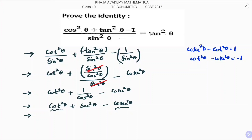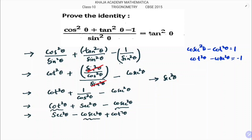Write it as sec²θ minus cosec²θ + cot²θ. Take minus common from the last two terms: sec²θ minus (cosec²θ - cot²θ). By the standard identity, cosec²θ - cot²θ = 1, so this becomes sec²θ - 1.